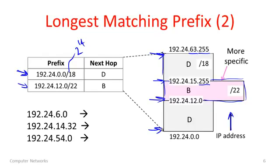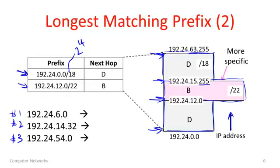So the slash 18 grey block — where we forward to D — is a much bigger block, and the pink slash 22 block is entirely within it. I've drawn the grey block as less wide because it's a less specific address. This is a representation of our forwarding table. Let's try and use it for forwarding. I have three addresses here — number 1, number 2, and number 3 — and let's see where they go.